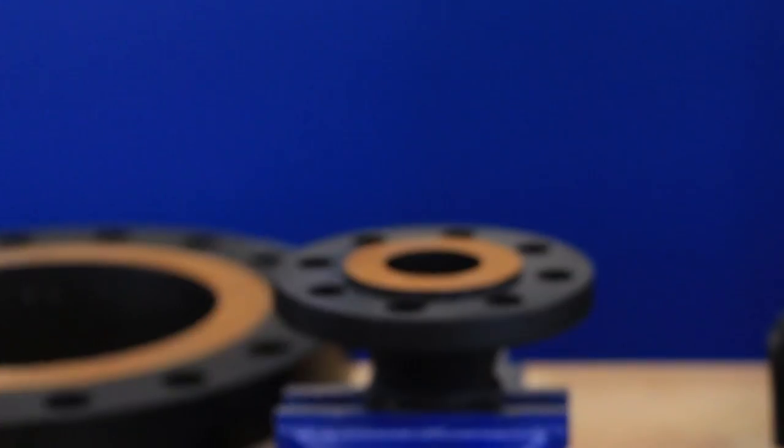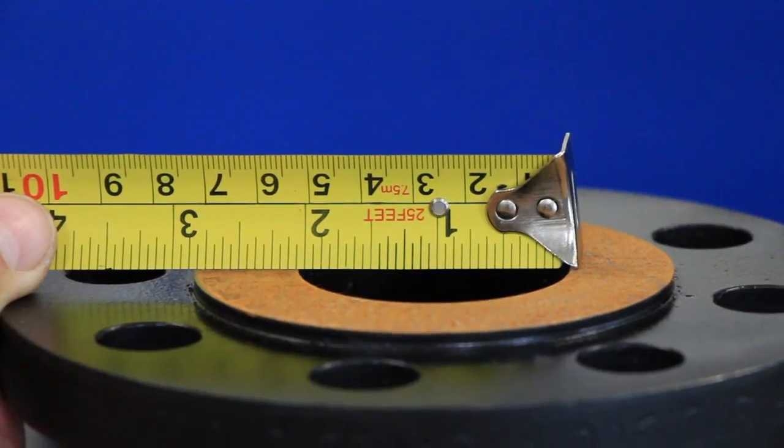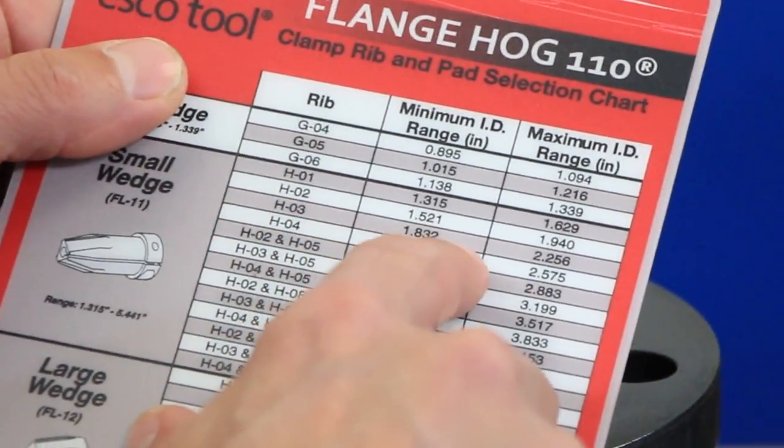After familiarizing yourself with the Flange Hog 110 kit contents, measure the ID of the flange and consult the clamp rib and pad selection chart to determine the tooling configuration.